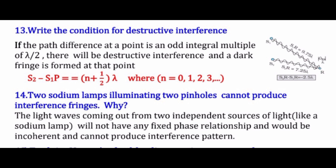The next question is: two sodium lamps illuminating two pinholes cannot produce interference fringes — why? Because they are incoherent sources, so they cannot produce a stable interference pattern.